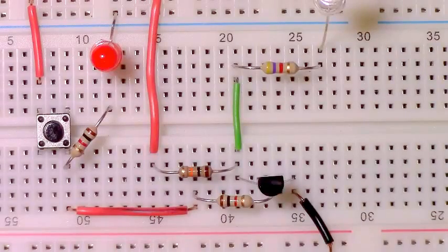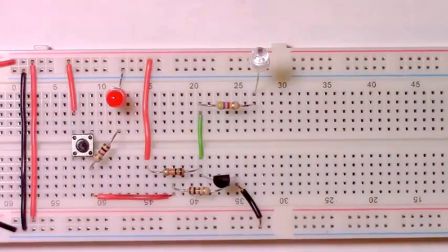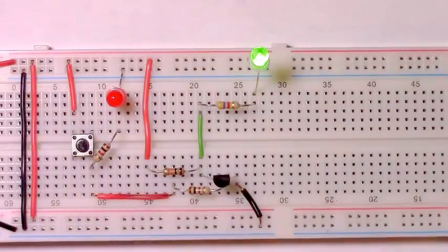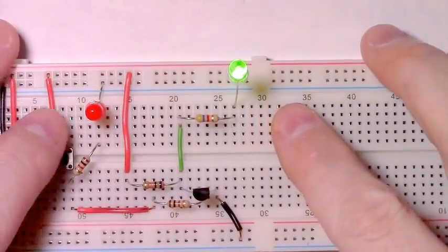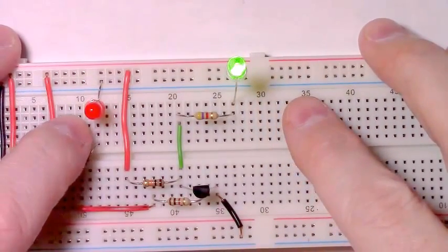If we've done everything right, we should now have a NOT gate. Let's hook up some power and see. Hook power up. That's a good sign. Our output is on when our input is off or low.